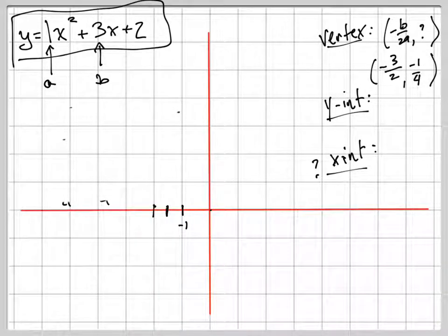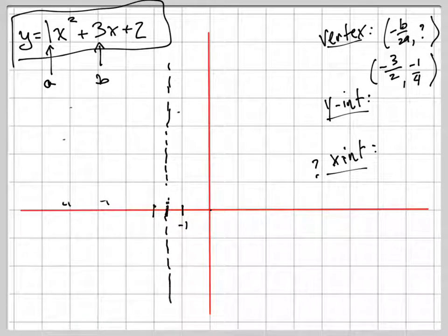I'm going to draw in a vertical line here. Why would I do that? Why would I draw in a vertical line at negative 3 halves? Because we know it's a parabola. And we know that the vertex, wherever the vertex is, which is right here.